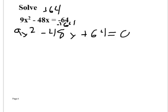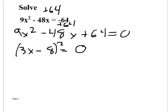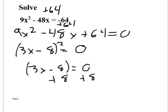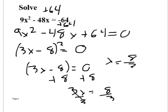So we take the square root of the first minus the square root of the second, which gives (3x - 8)², and we find when that equals 0. Set 3x - 8 = 0. Add 8 to both sides: 3x = 8. Divide by 3: x = 8/3. That's my answer.